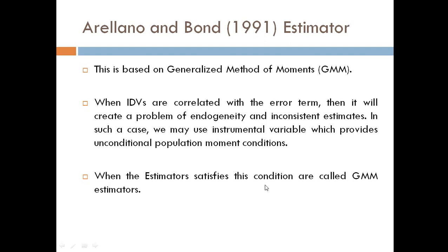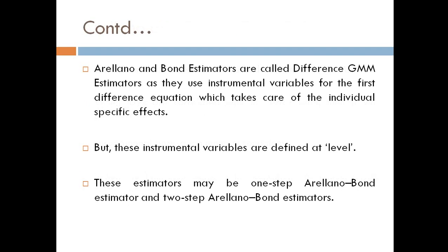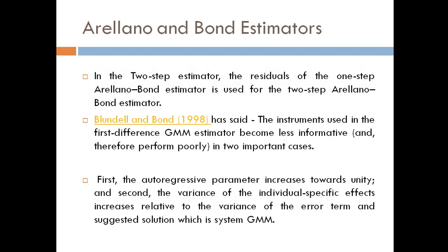Estimators that satisfy this condition are called GMM estimators. Arellano and Bond estimators are called difference GMM estimators, as they use instrumental variables for the first difference equation, which takes care of individual specific effects. But these instrumental variables are defined at level. These estimators may be one-step Arellano-Bond estimators or two-step Arellano-Bond estimators. In the two-step estimator, the residuals from the one-step estimator are used.